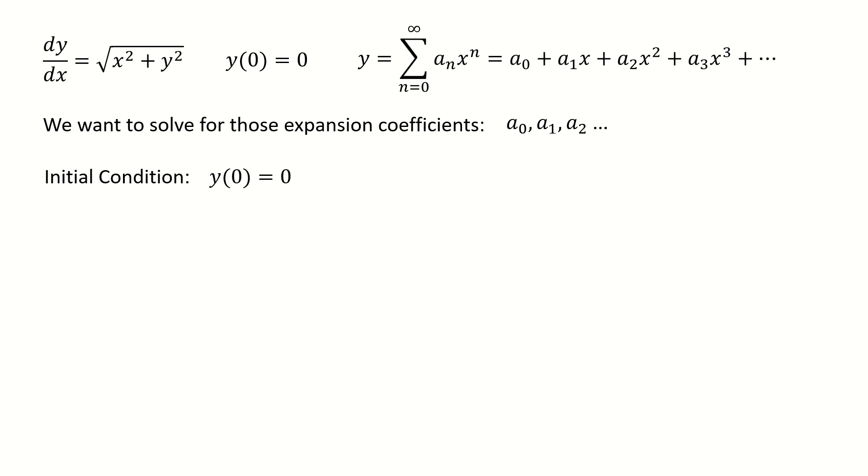And from our initial condition y(0) equal to 0, we can plug into this solution. So we got here. And immediately we got a0 equals to 0. So we can write this solution in this form. And note here for n, it start from 1. And also we can do the derivative and we got here.